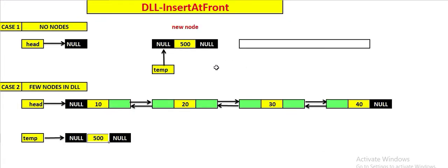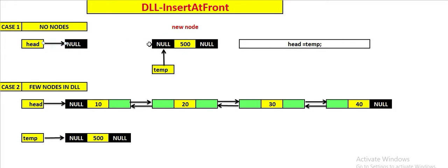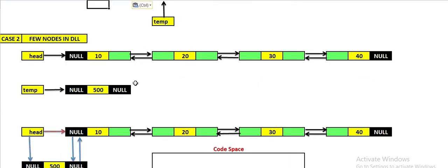In the first case, when there is no node, since head always points to the first node, we change the address of head from null to temp, so that wherever temp is pointing to, head will also point to the same location. We write: head = temp. That is how we insert a node when there is no node in the DLL.